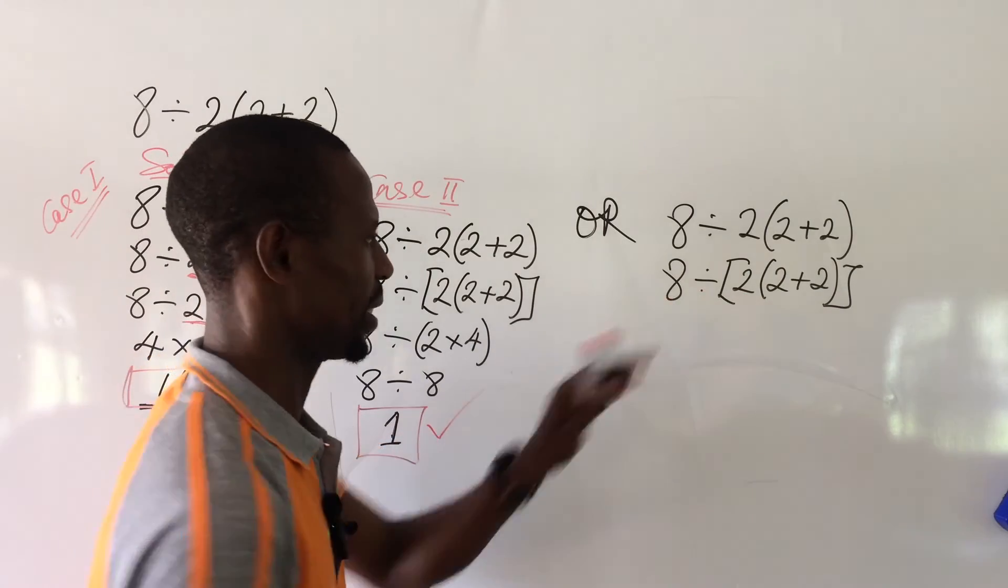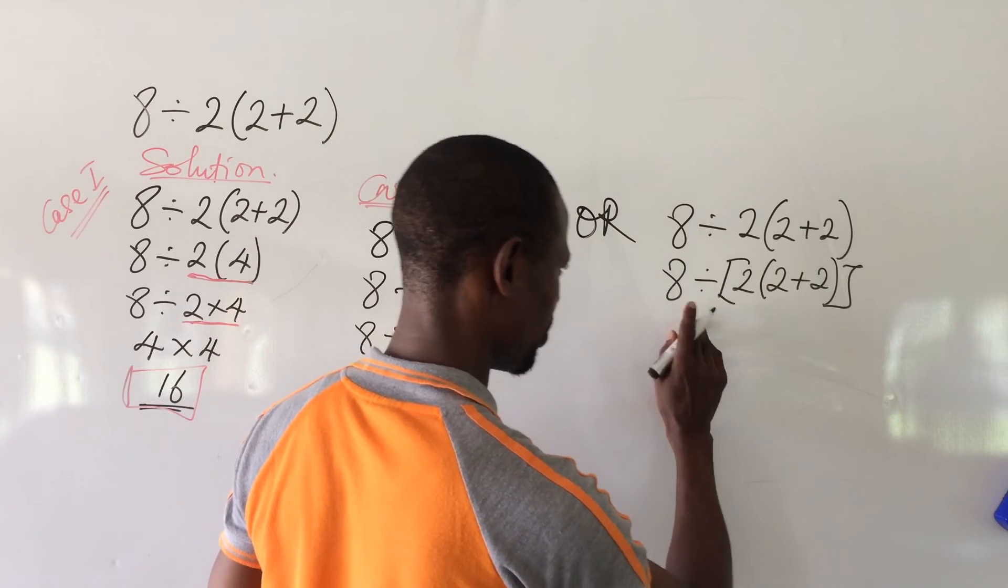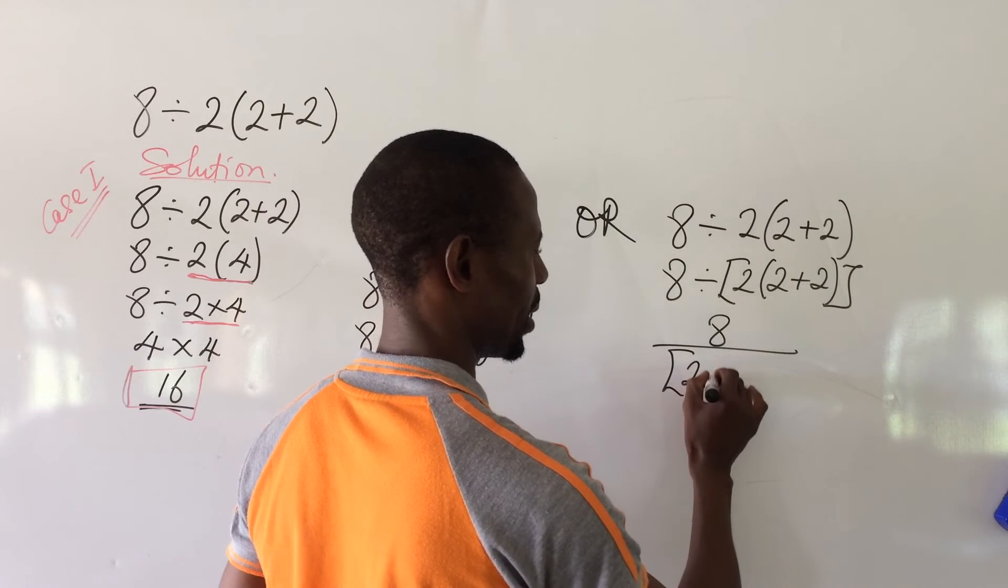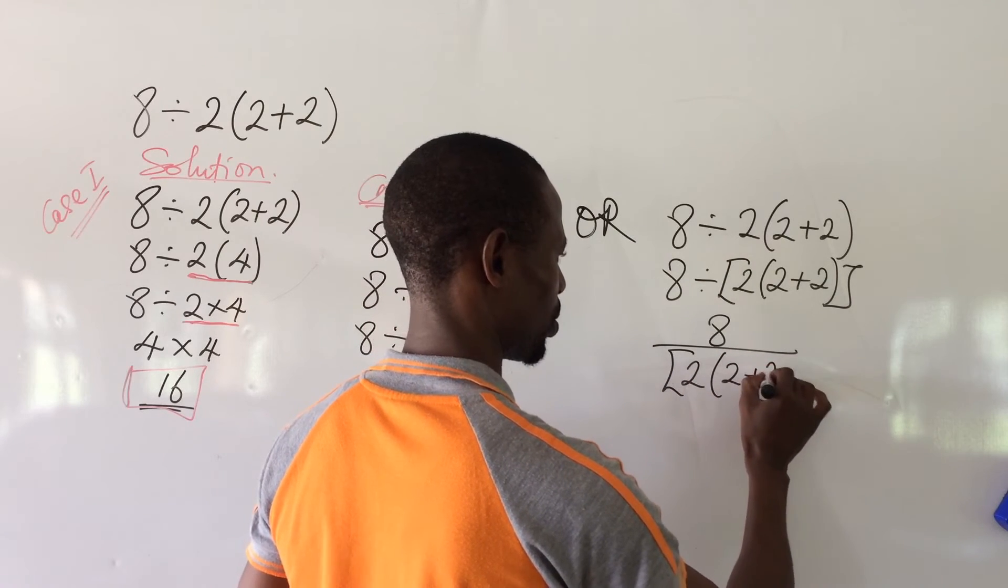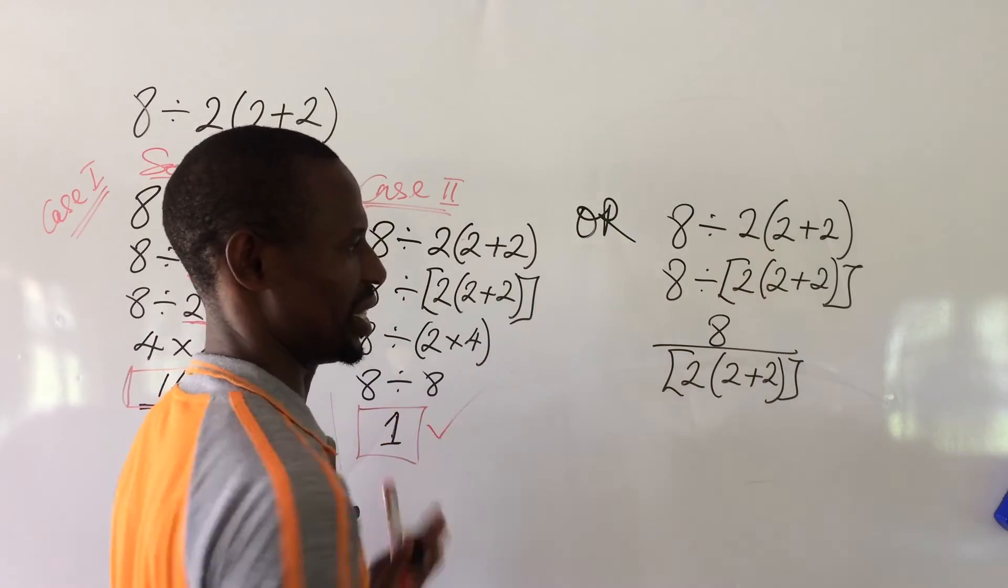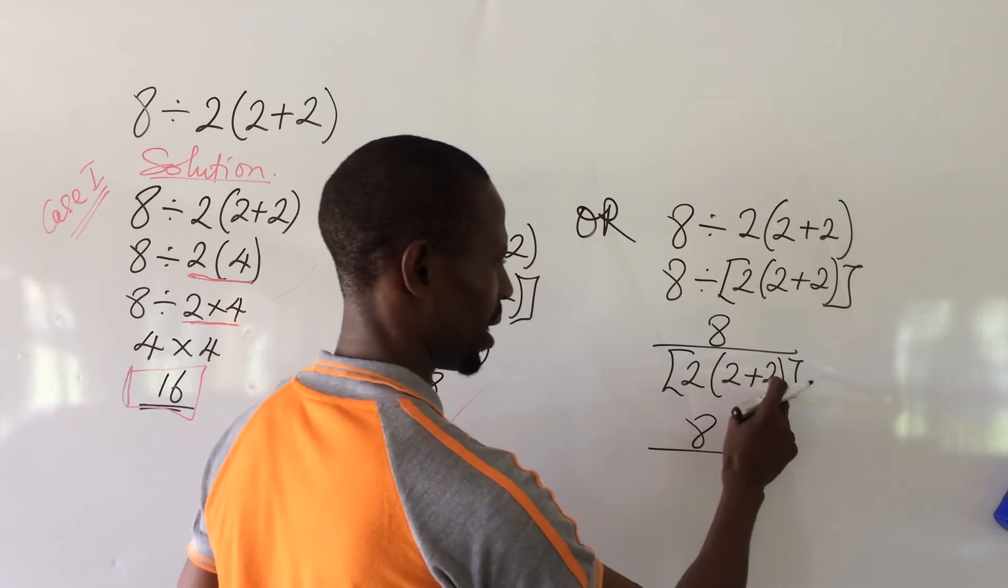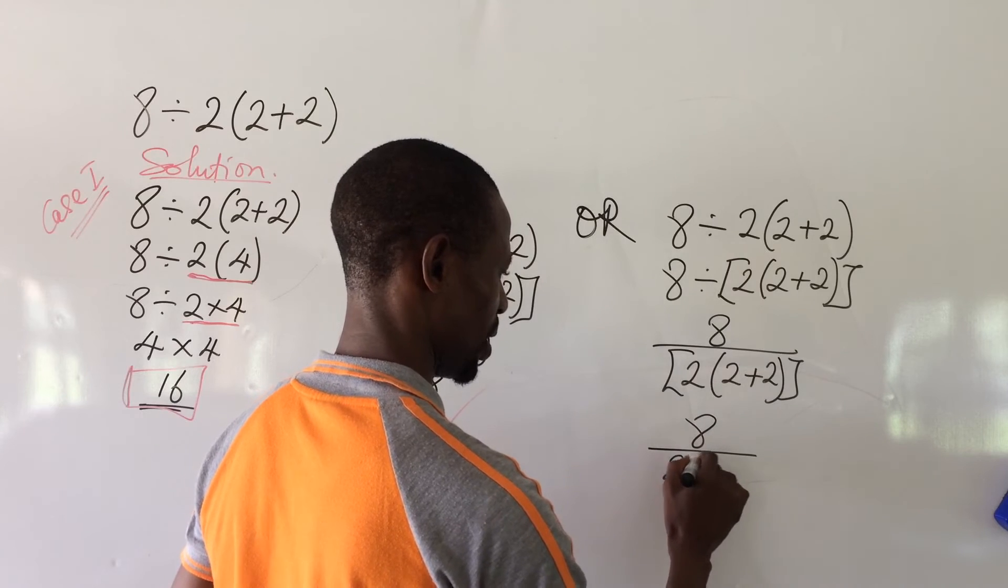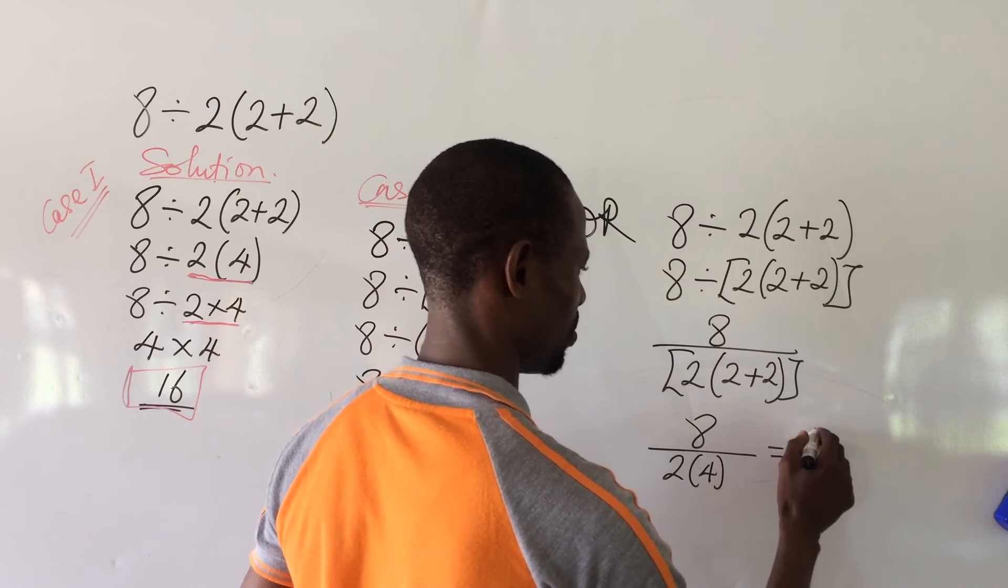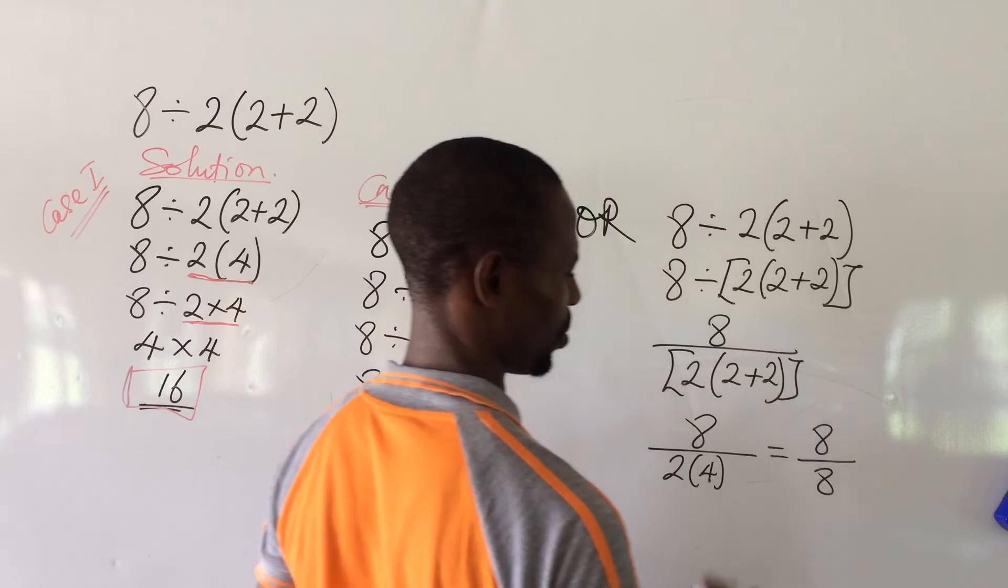What is this sign? This is a division sign. So I can equally express this expression we have here as 8 all over square bracket into 2 bracket 2 plus 2 close bracket, square bracket close. This and this, they are the same. Now we go further to give us here 8 all over. Add up these 2 to give us 2 into 4. So if we multiply out, we're going to have this to be 8 all over. Here we have 8. And 8 into 8 will give us what? 1.